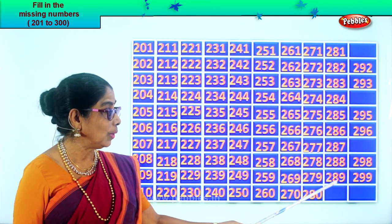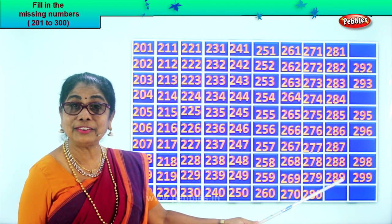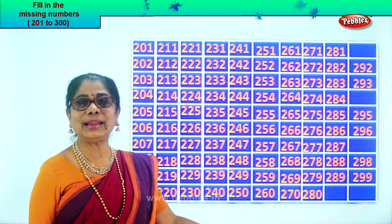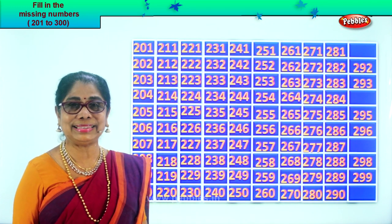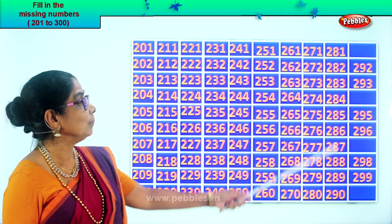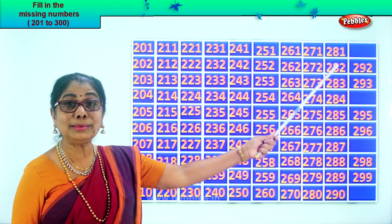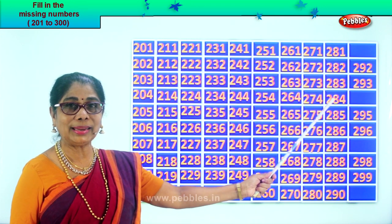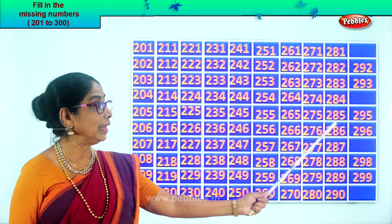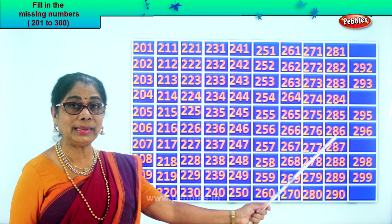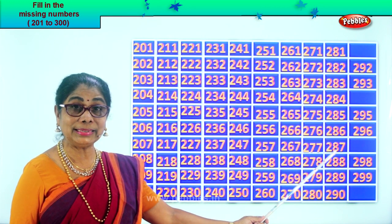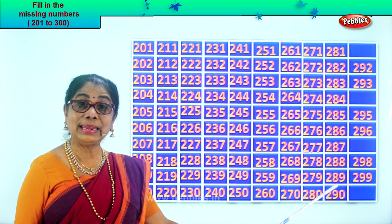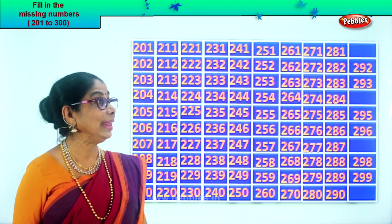288, 289. After 89, 90. 90. Good. 281, 282, 283, 284, 285, 286, 287, 288, 289, 290.